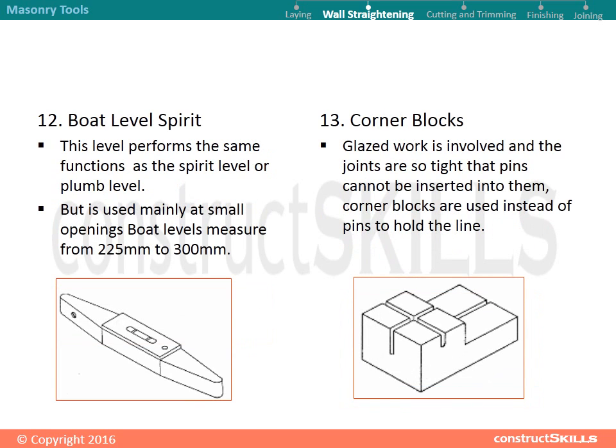Wall straightening tools: boat level. This spirit level performs the same functions as the spirit level or plumb level but is used mainly at small openings. Boat levels measure from 225 mm to 300 mm.